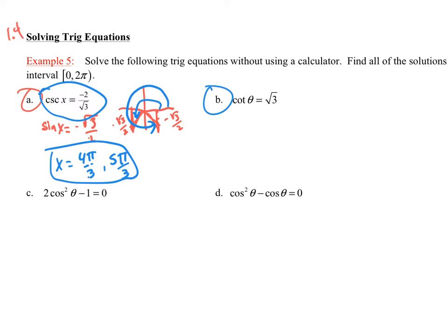Part B, cotangent of theta is equal to square root of three. You can change this into tangent as well if you wish. So this would be one over the square root of three. Where do I get the one over square root of three from?